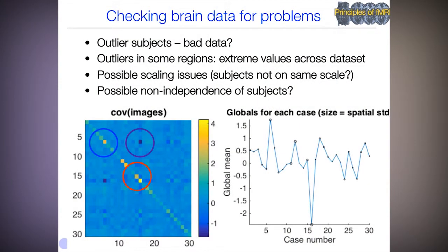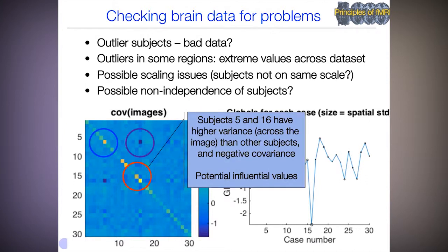We can also look at the covariance across images. The variances on the diagonal reflect variation across image space, while off-diagonals reflect how correlated the images are. This helps diagnose scaling issues and possible non-independence across subjects — if sections of the data show positive or negative off-diagonal values. Here, subjects 6 and 16, which we flagged before, have higher variance across the image than all other subjects, and also have negative covariance. These are potential influential values because they're quite different from everyone else everywhere in the brain, giving them greater pull on the regression line.